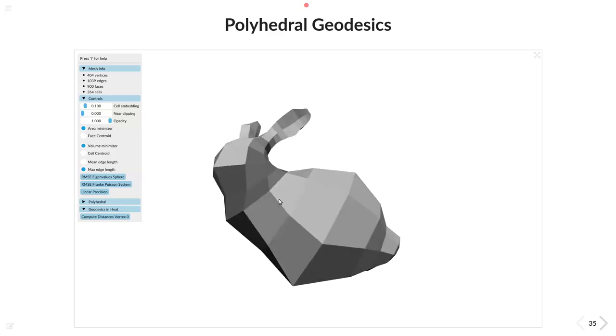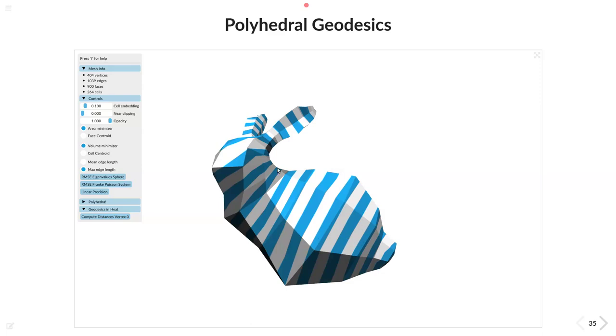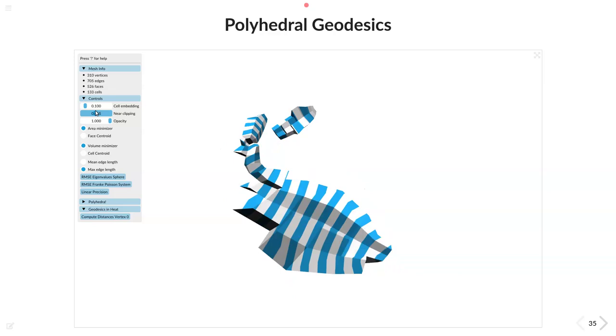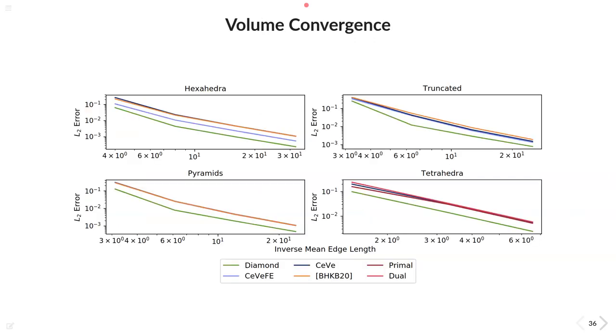So once again the qualitative results let's have a look at it. Now we can compute the geodesic distances on our volume mesh and instead of only traveling on the surfaces we also see that the geodesics walk through our mesh and we get nice results on all shapes.